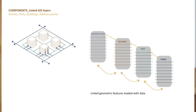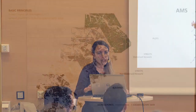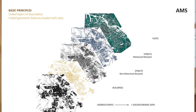We can link information on the building — for example, the height or the age of construction — to the plots, the streets, and so on. All this information is linked. This is an example of part of Amsterdam. We have these geometric layers of description that are interlinked.